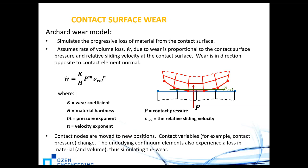The model assumes the rate of volume loss (ẇ) due to wear is proportional to the contact surface pressure and relative sliding velocity. The formula is: ẇ = (k/H) × p^m × v^n, where k is the wear coefficient, H is material hardness, p is contact pressure raised to exponent m (the pressure exponent), and v is the relative sliding velocity raised to exponent n (the velocity exponent).